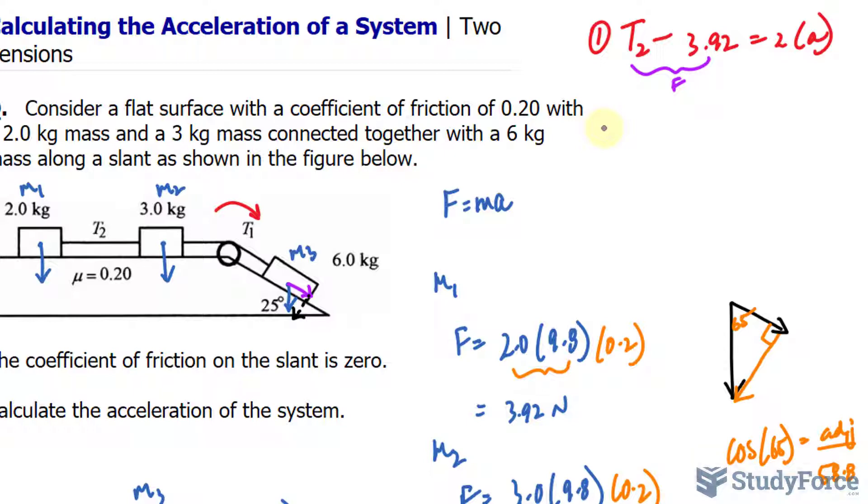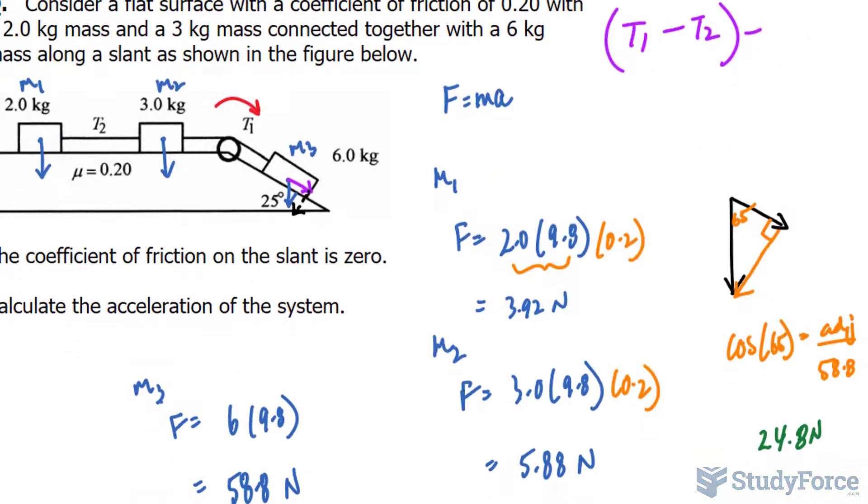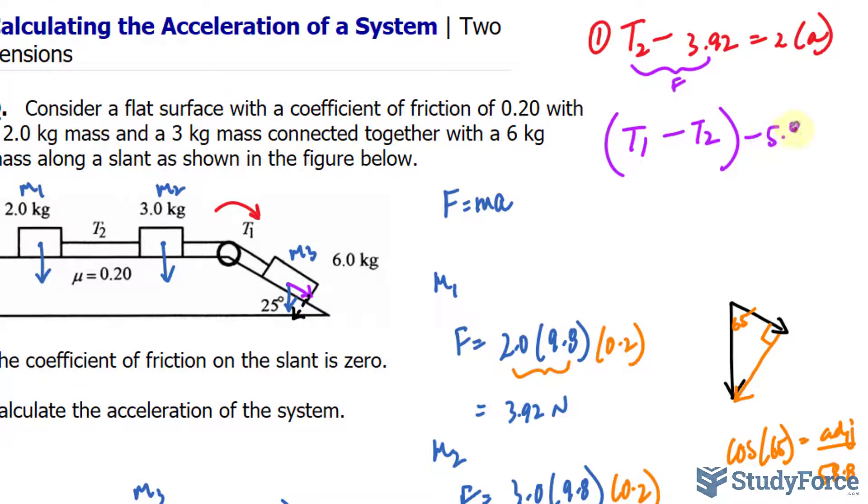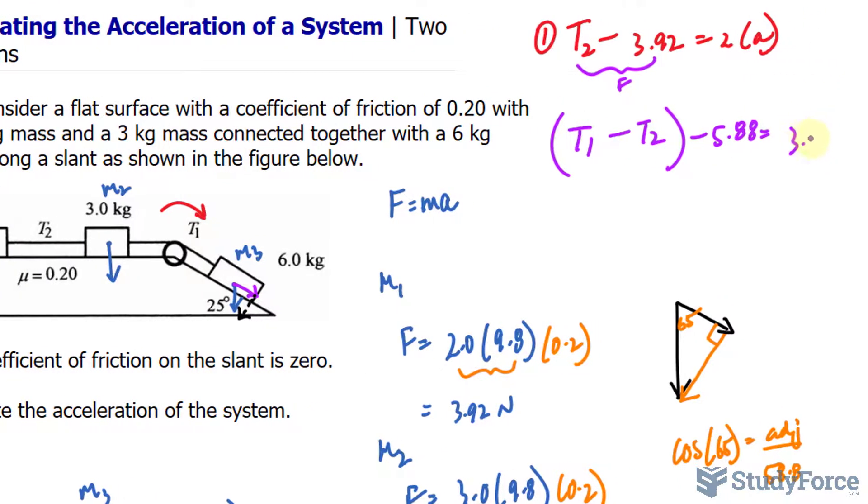Our second equation will be based on mass two. We'll take the difference between these two tensions. So, since it's moving clockwise, we'll write down T sub 1 minus T sub 2. We take the difference because one is going this way and the other one is pulling that way. And we subtract that by the force due to gravity, which was 5.88. And that's equal to the mass of 3.0 times the acceleration.